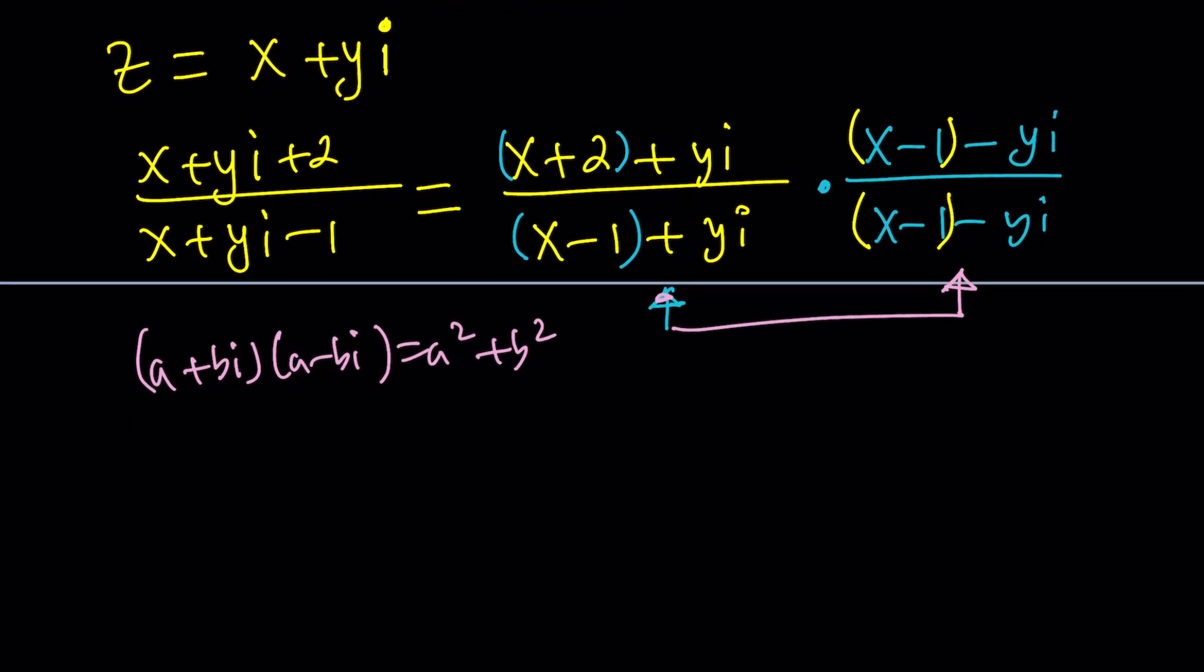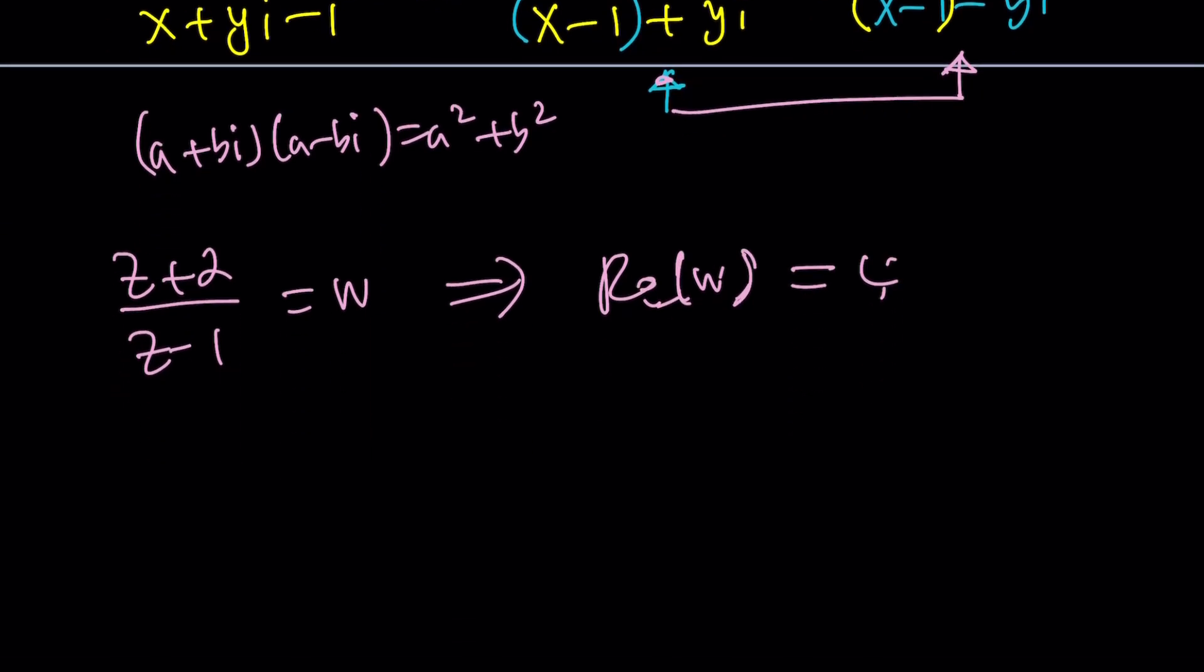But what about the top? For the top, we must do a lot of distribution. But let me tell you something. When you distribute this, let's call this number something. How about W? We're given that real part of W is equal to 4. From here, we're going to find the locus. Which number satisfies this?